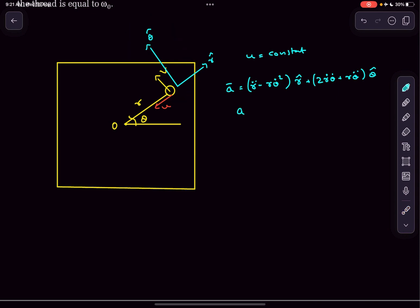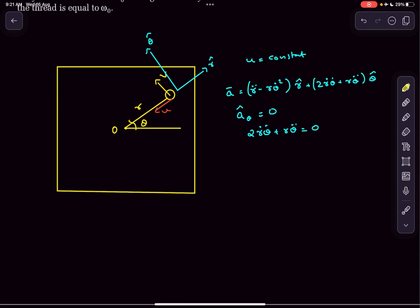As there are no friction forces, there are no forces acting on mass m in the theta direction, which means acceleration in the theta cap direction is 0. So we can say 2r dot theta dot plus r theta double dot equals 0.